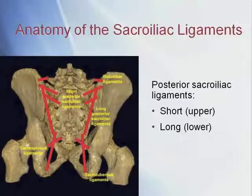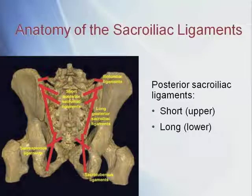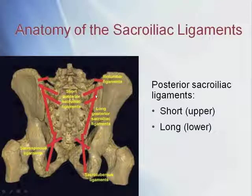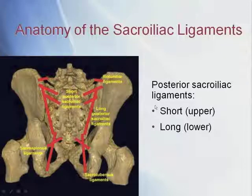Here's another illustration. The uppermost horizontal line is the iliolumbar ligament, which we'll cover in another webinar. Under that you can see the upper sacroiliac fibers — these short ones going almost horizontally. And then there are the long ones coming down here, going obliquely down toward the lower sacrum.